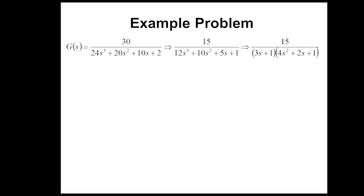Let's take a look at the example problem. This is a higher-order system — a third-order polynomial in the denominator with no zero in the numerator. We can simplify it by dividing by two in the numerator and denominator, and then factorize to see some of our poles more easily. We have one pole here at negative one-third, and we want to compute the other poles.